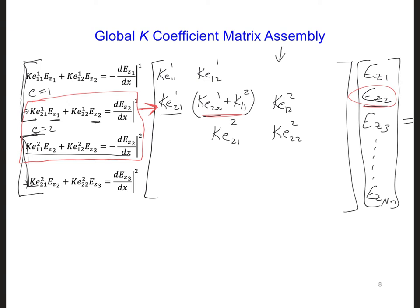For example, if we were to keep adding in for the third element now, we would have plus Ke 1,1,3 added on there. Here we would have another Ke 1,2,3.